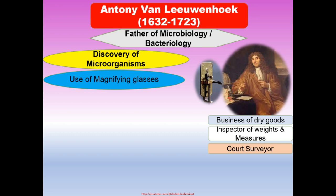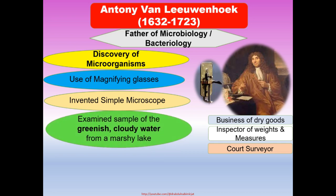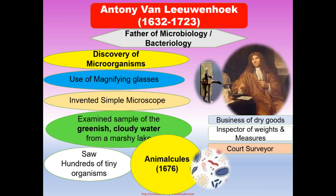In his free time, he ground pieces of glass into fine lenses, placing them between two silver plates, and finally became successful in inventing a simple microscope. He observed samples of greenish cloudy water from a marshy lake outside Delft and saw hundreds of tiny organisms, which he named animalcules. He also examined samples from rainwater, material from his own teeth, and fecal material.